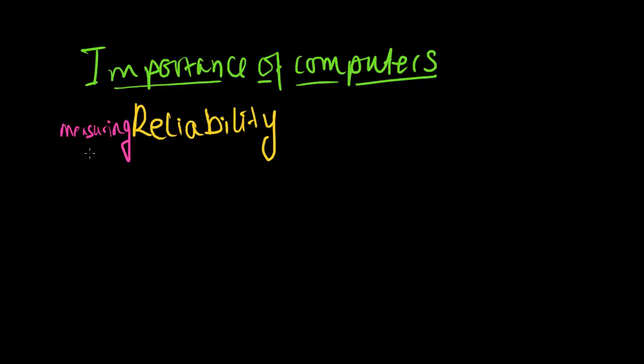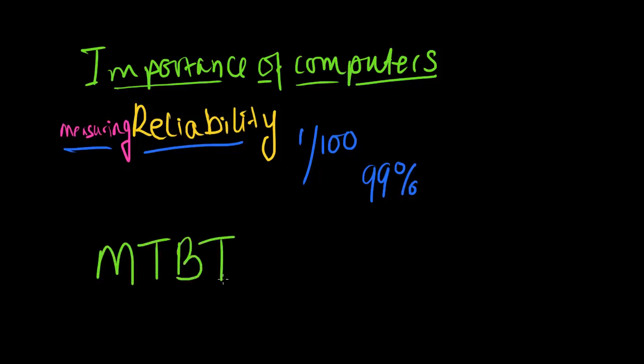This brings us on to measuring reliability. How do we know how reliable a computer system is? We talk about the system availability, meaning how long is it available for. For example, if a system is down or unavailable for one hour in a 100 hour period, we say the system availability is 99% for this period. Normally equipment manufacturers will quote average availability times over a specific, often a long period of time. Another way of measuring a system's reliability is to measure the length of time between system failures. So MTBF, which stands for mean time between failures, is quoted by equipment manufacturers as an indication of how reliable the system is.